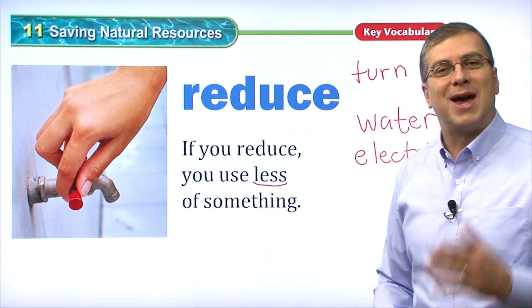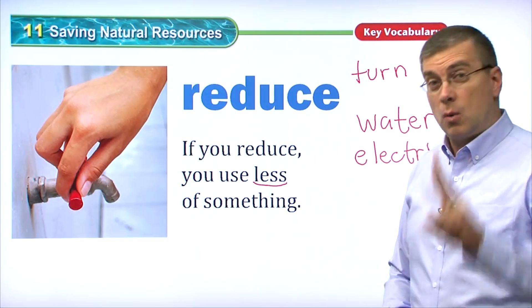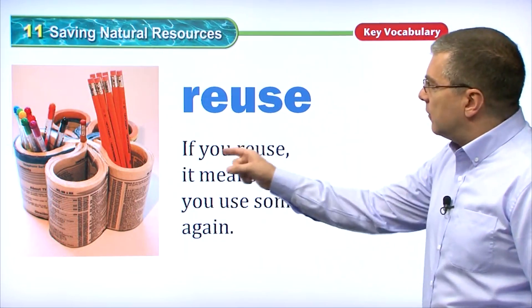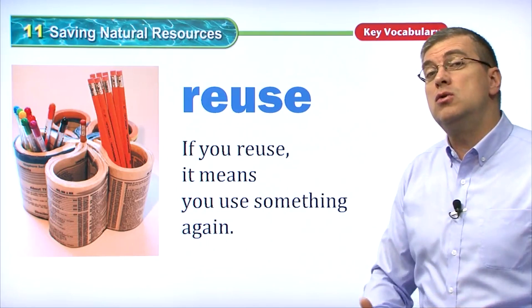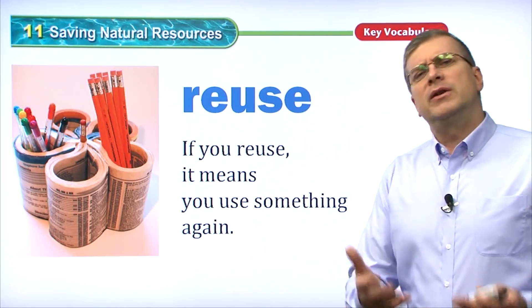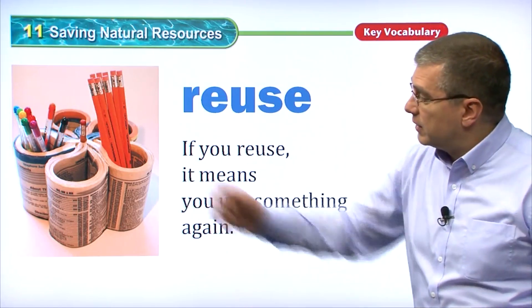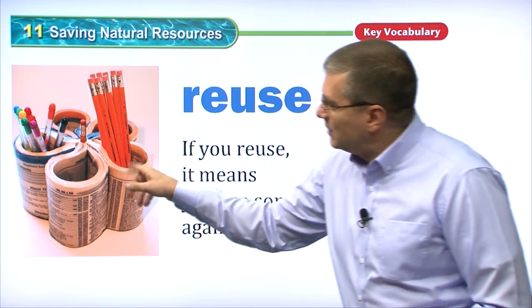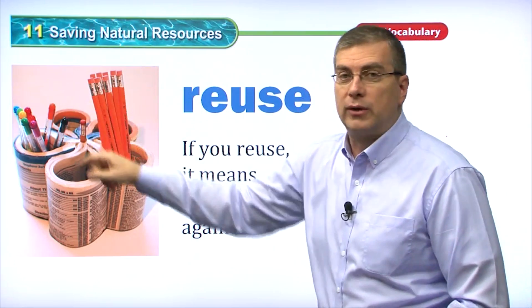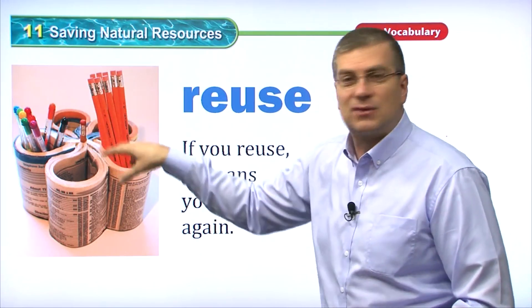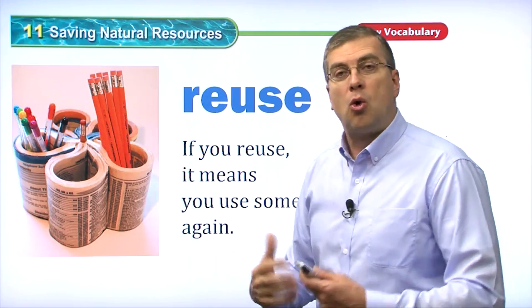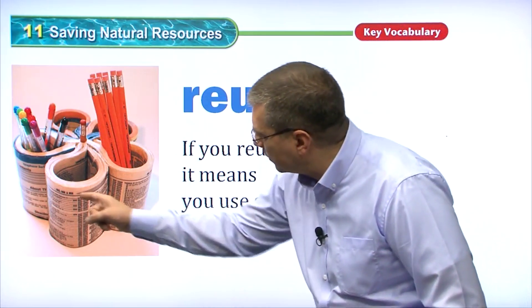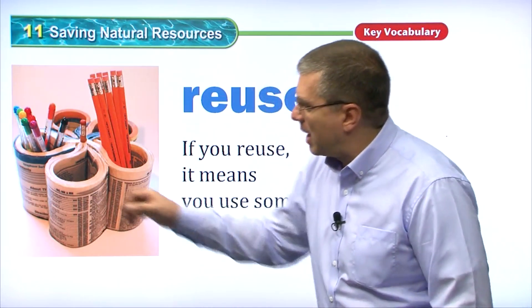This is a very important way to help conserve our natural resources. The second way is to reuse. If you reuse something, it means you use it again. Looking at this picture, we see a pencil and pen holder you can put on your desk to help organize your pens, pencils, and office supplies.